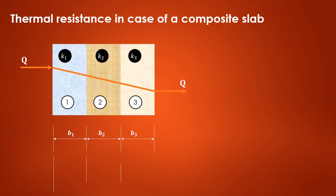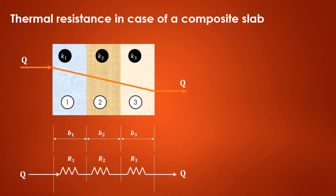The resistance offered by the different materials is also indicated here, so the resistances are R1, R2, and R3. R1 is the resistance offered by slab 1, R2 is the resistance offered by slab 2, and R3 is the resistance offered by slab 3. In our previous video we have already derived the expression for thermal resistance in case of a slab.